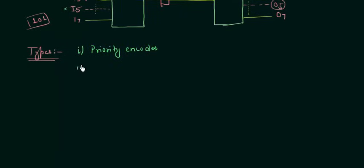The second type of encoder is your decimal to BCD encoder. The third type is your octal to binary encoder. And the fourth and the last encoder that we have to see is your hexadecimal to binary encoder.